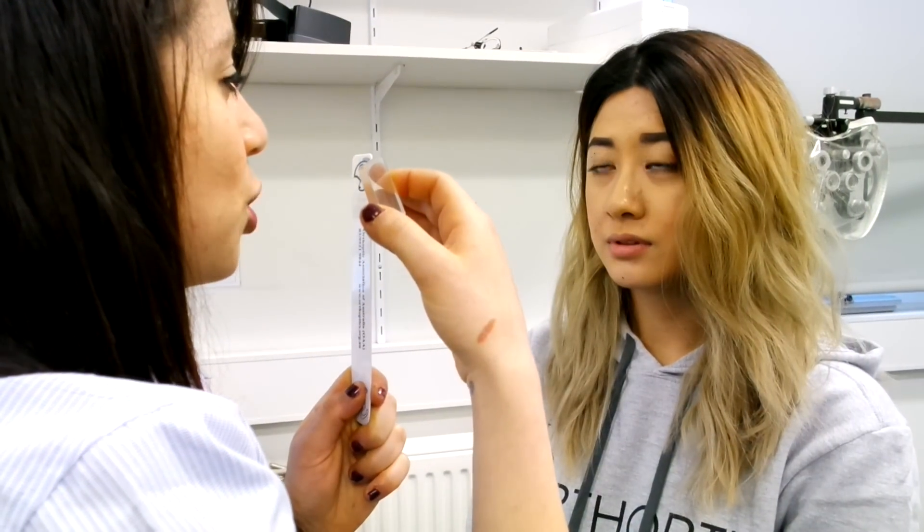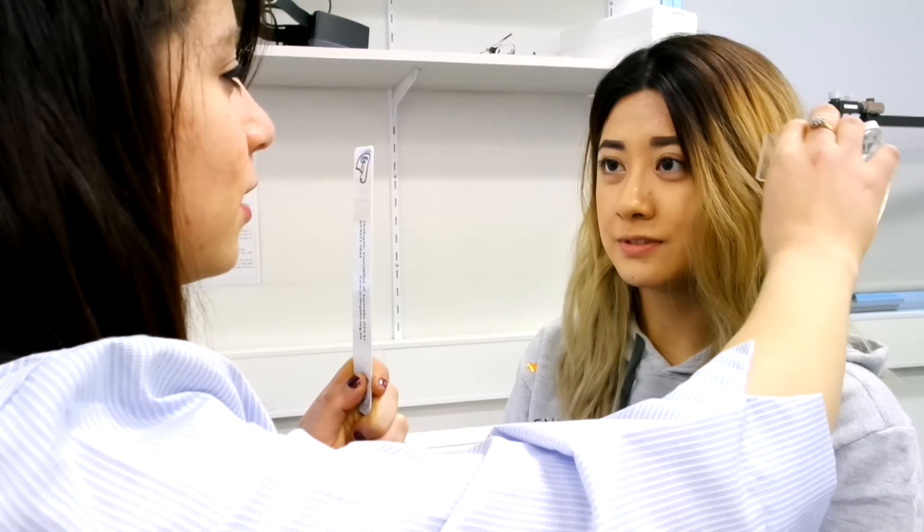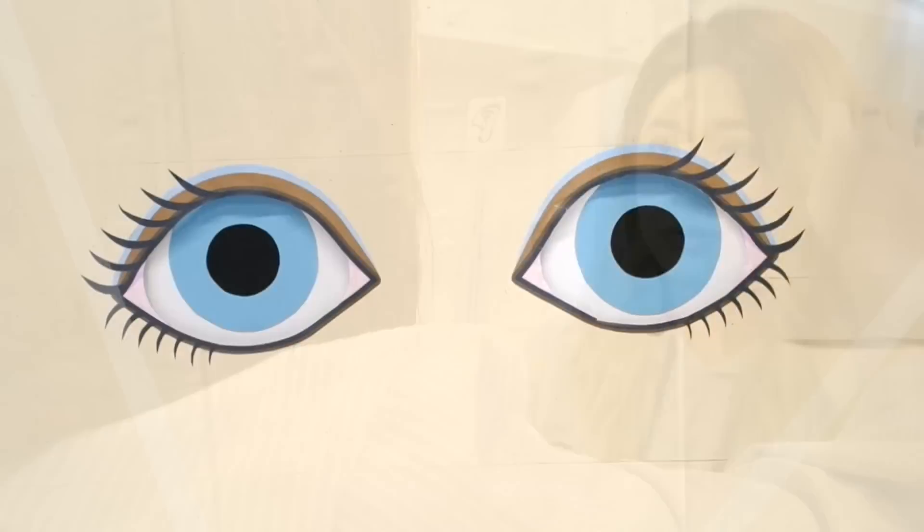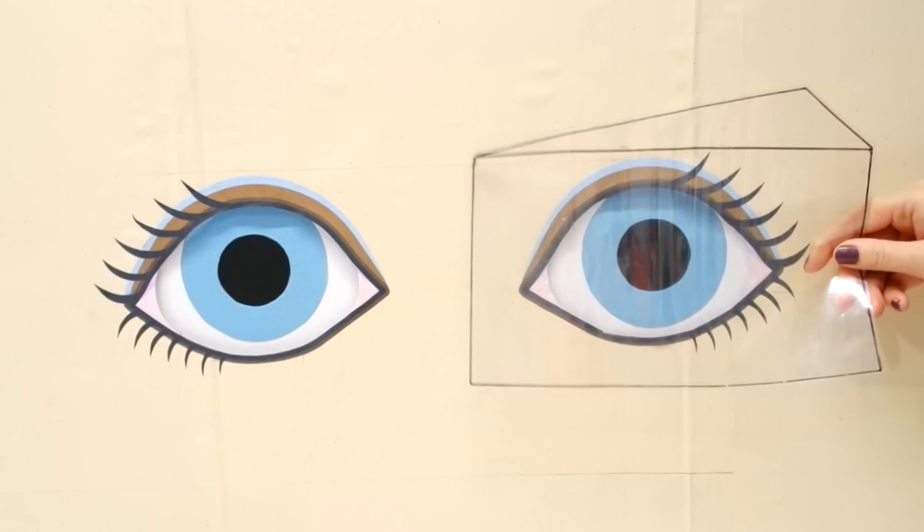Can you just focus on the top letter for me here please? Sure. Thank you. When the prism is placed over the deviating eye, you will see no movement from either eye.